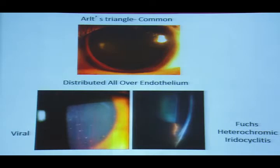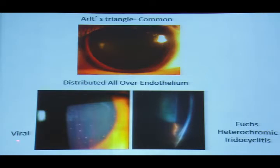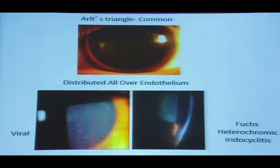When looking at the distribution of KPs, they usually form Arlt's triangle distribution. However, if keratic precipitates are distributed all over the endothelium, the differentials are a viral etiology or Fuchs' heterochromic iridocyclitis.